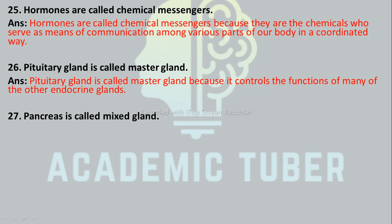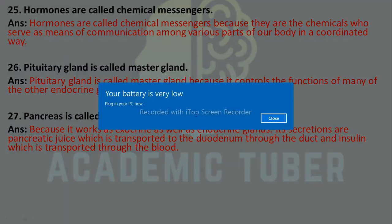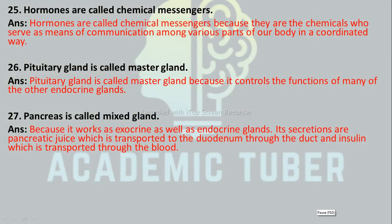The pancreas is called a mixed gland. Why? The pancreas is called a mixed gland because it works as both an exocrine and endocrine gland. Its secretions include pancreatic juice, which is transported to the duodenum through a duct, and insulin, which is transported through the blood.